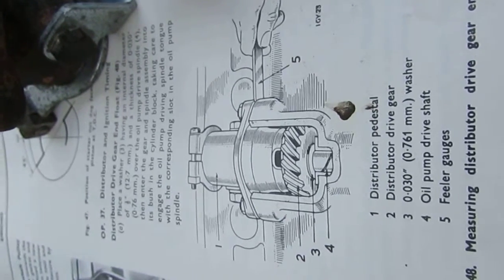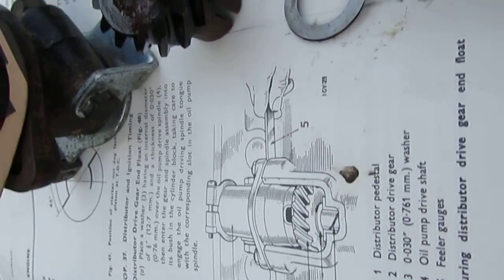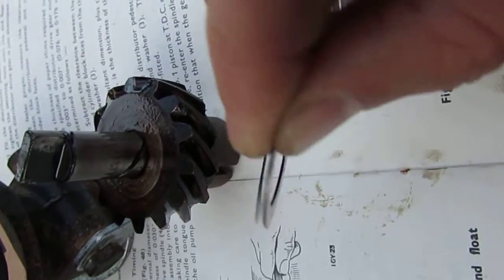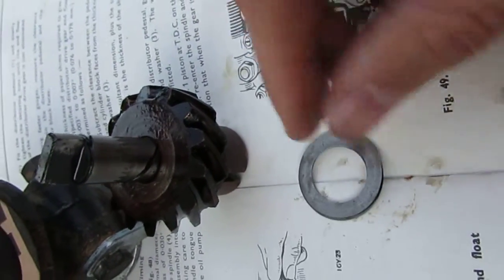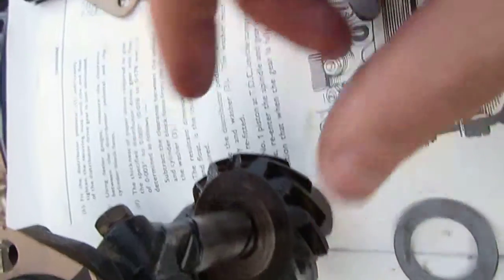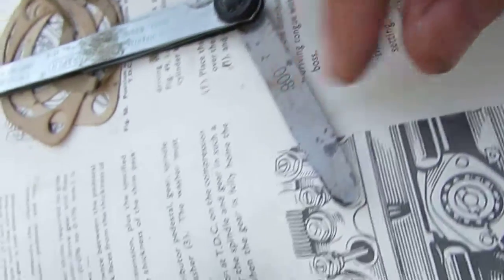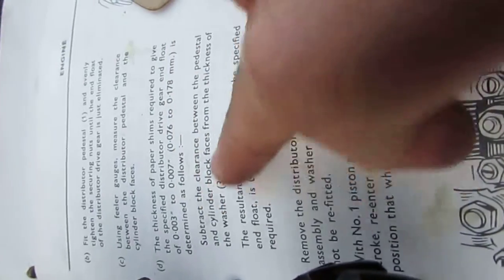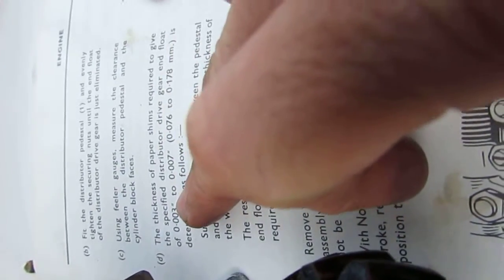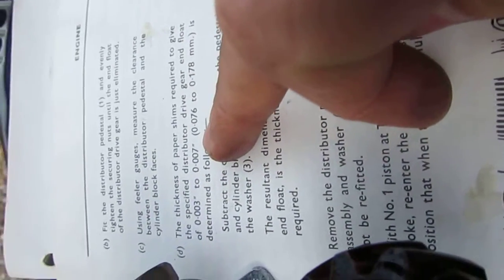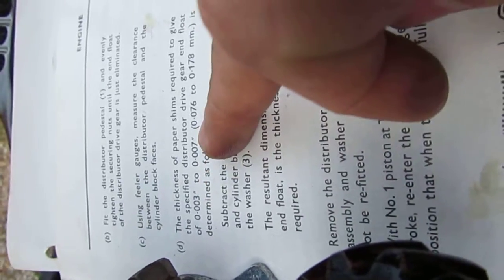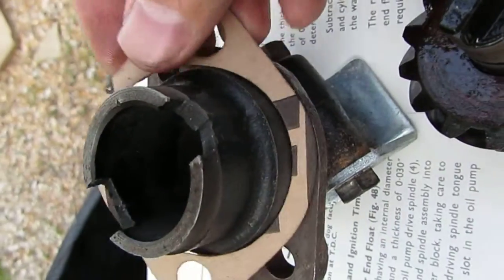I've just set the distributor drive end float following the manual. I had some 16 thou thickness washers, placed them on the drive gear, then used a feeler gauge to measure the gap of about 8 thou. That meant it was 8 plus the 3 to 7, so I was looking at 11 to 15 thou thickness of gasket.